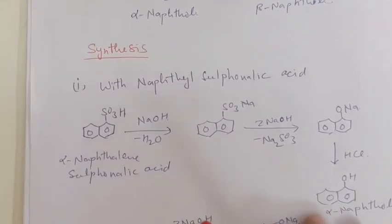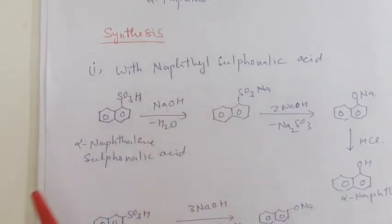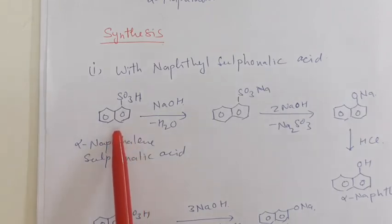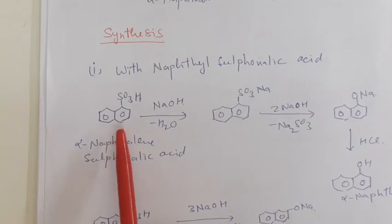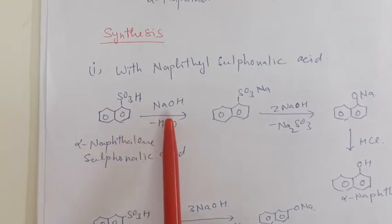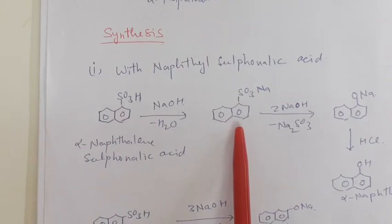The synthesis of alpha and beta naphthol: first, it can be synthesized from naphthalene sulfonic acid. If we take alpha naphthalene sulfonic acid, which can be formed from the sulfonation of naphthalene — by the reaction of naphthalene with sulfuric acid at 40 degree centigrade — we get alpha naphthalene sulfonic acid. This reacts with NaOH, eliminates a water molecule, and gives the sodium salt of sulfonic acid.